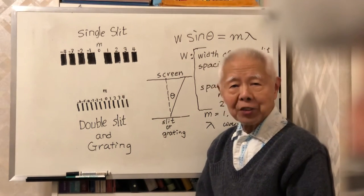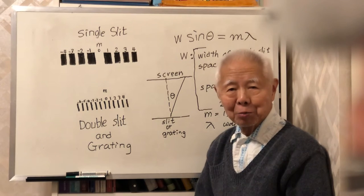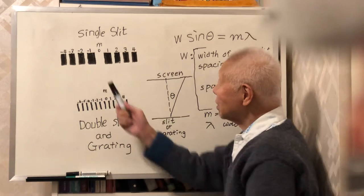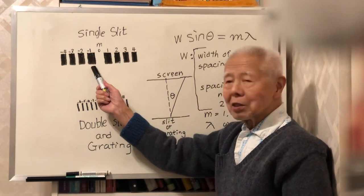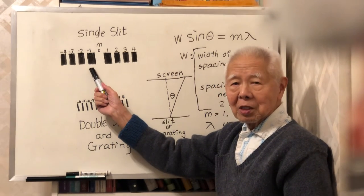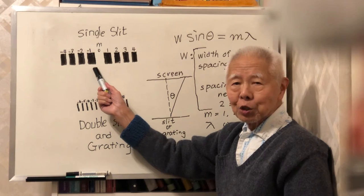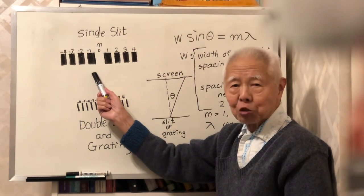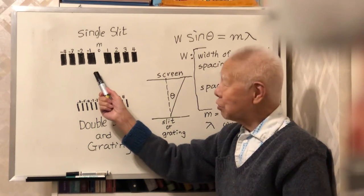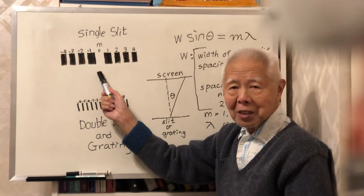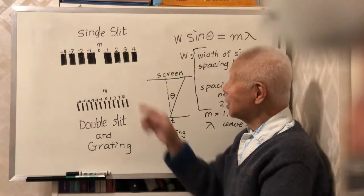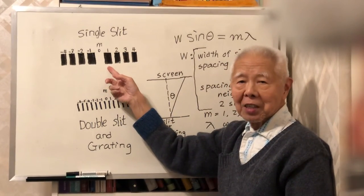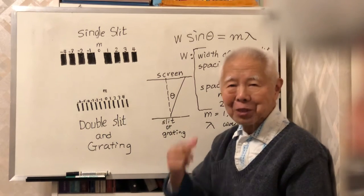How much wider? It's two times. From the dark on the left to the dark on the right, this width is the central bright width. This is two times the width between the number one dark and the number two dark — it's two times.